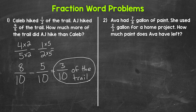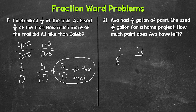Now let's move on to number two, where we have Ava had seven eighths of a gallon of paint. She used two thirds of a gallon for a home project. How much paint does Ava have left? So Ava started with seven eighths of a gallon of paint and then used two thirds of a gallon. So we are subtracting here. We're starting with seven eighths of a gallon and subtracting two thirds of a gallon to see how much paint is left. Now, do we have a common denominator here? No, so we can't subtract yet.